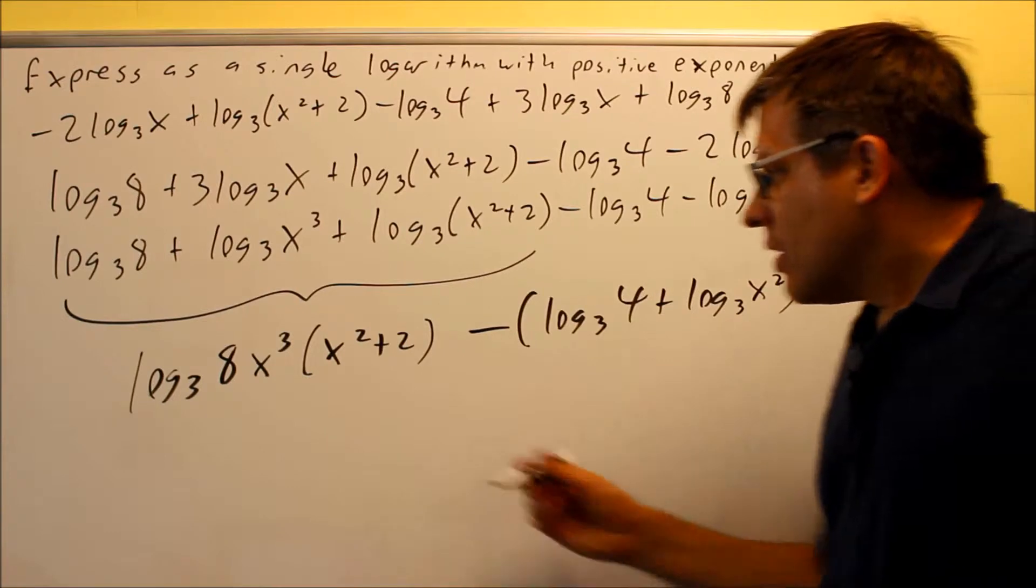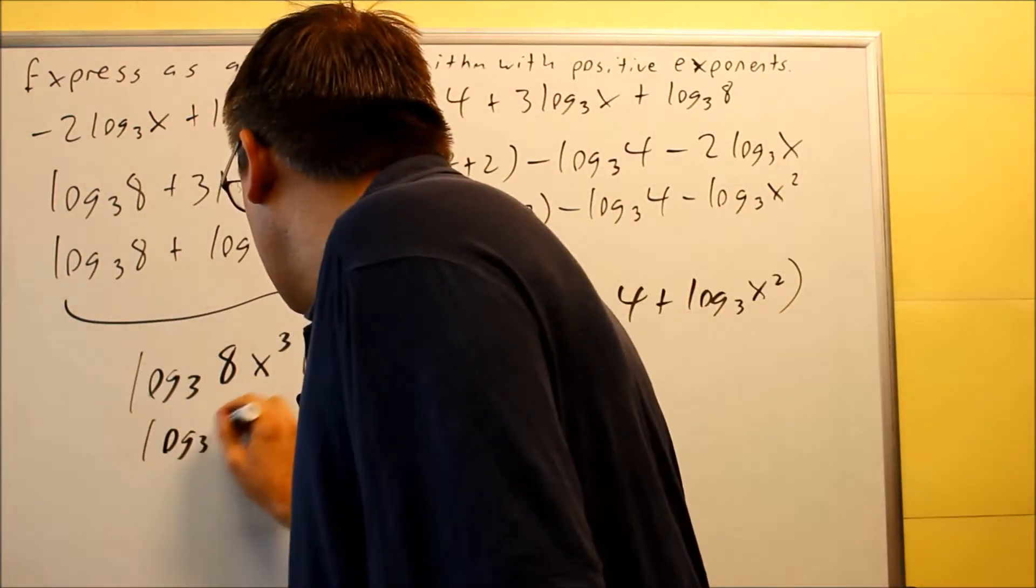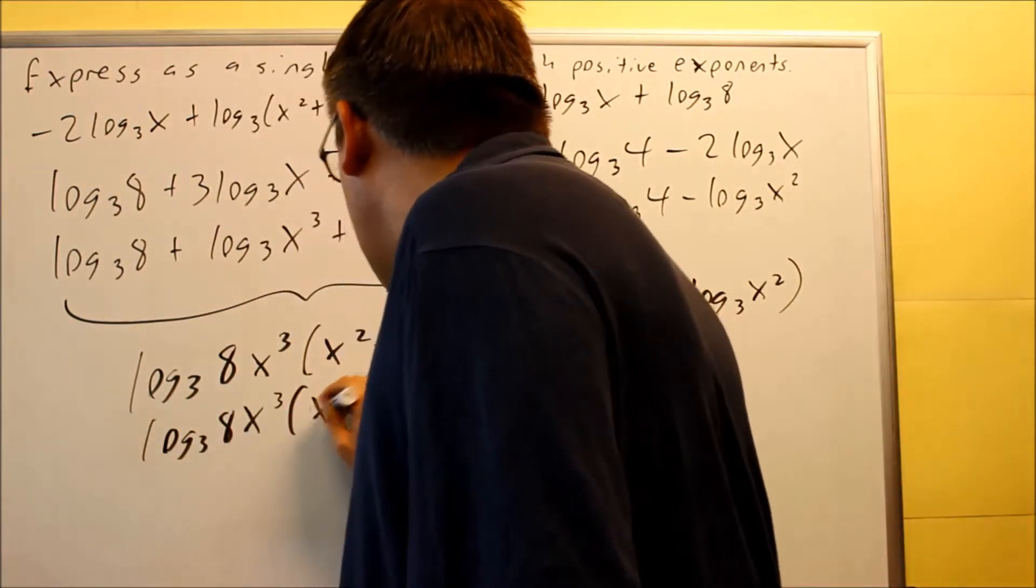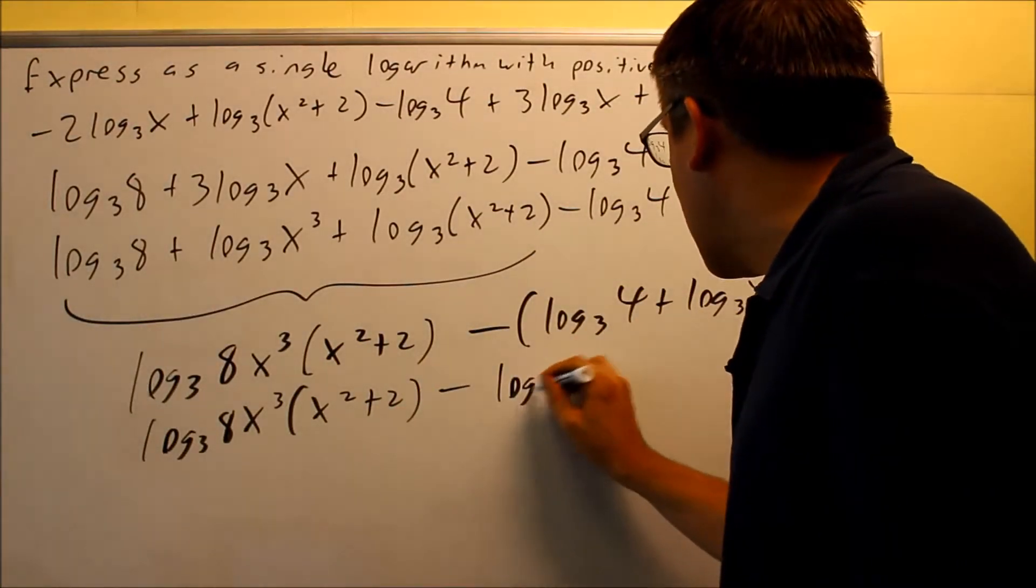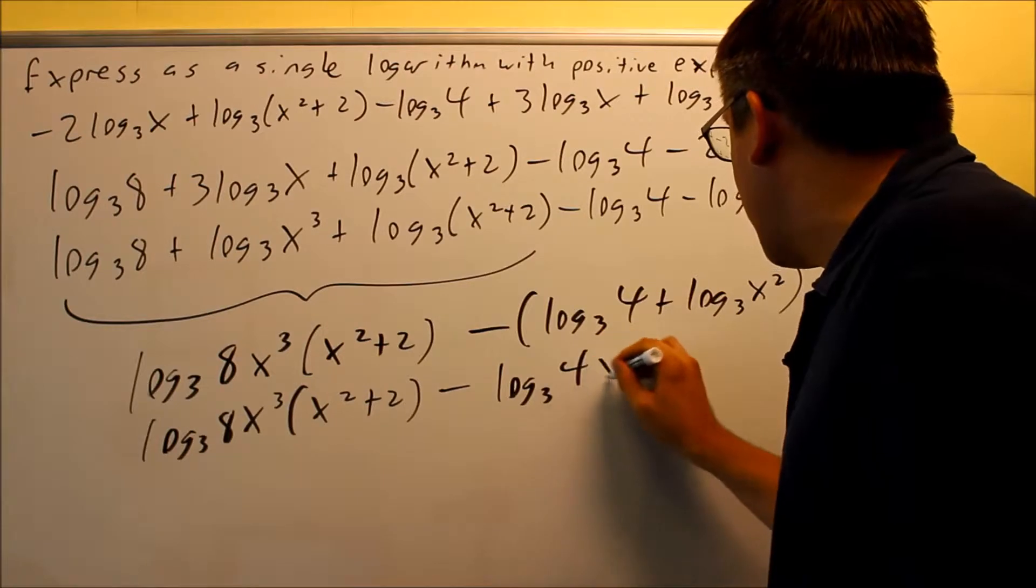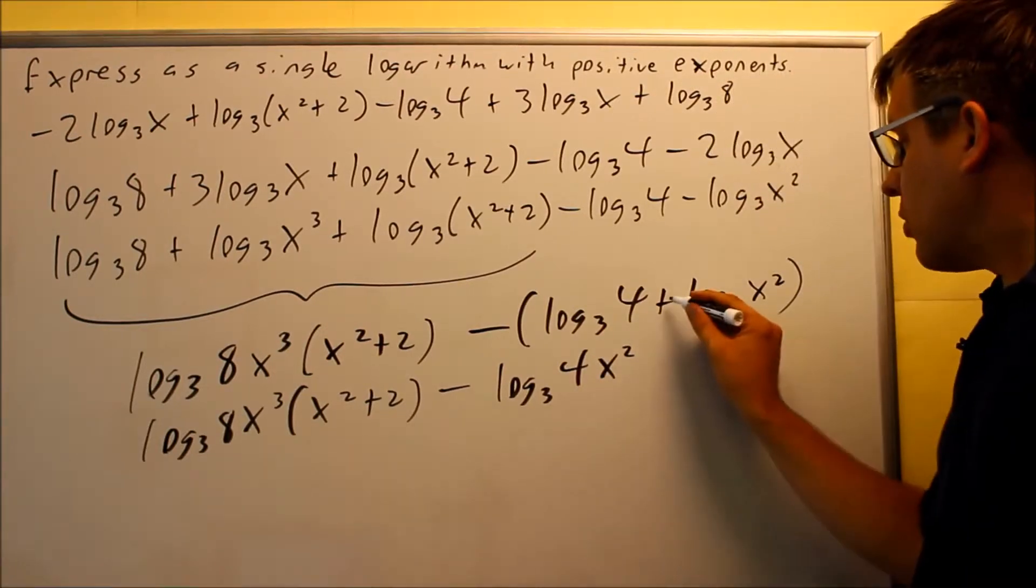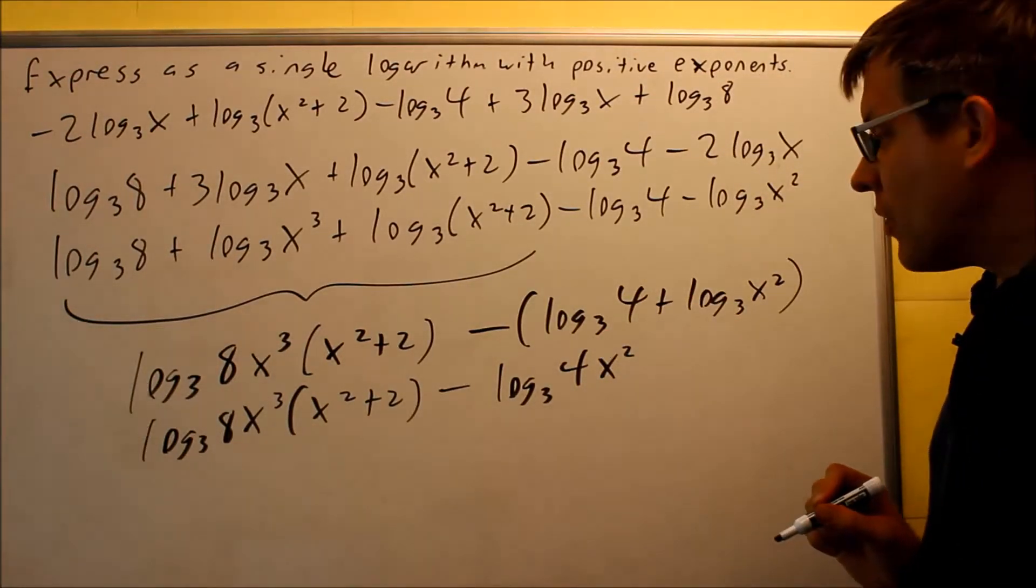So this part's done already. And so I have log₃ 8x³(x² + 2), and then I have a minus sign. Now these two here, I'm going to write that as a product as well. This would be 4x². The plus sign again would turn into a multiplication.